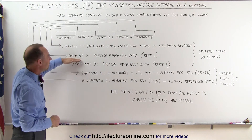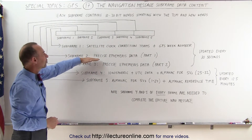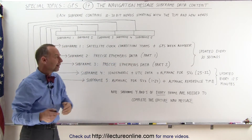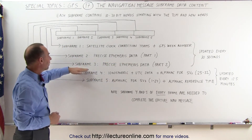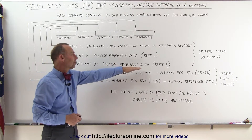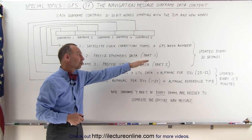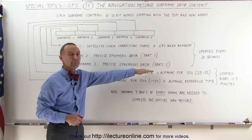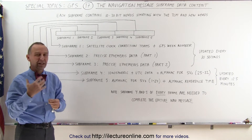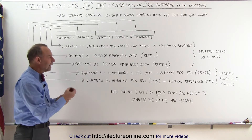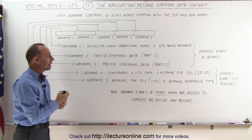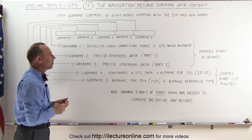The second subframe contains the precise ephemeris data of the satellite, and subframe 3 also contains the precise ephemeris data of the satellite — notice part 1 and part 2. That data contains the health of the satellite and specific information about the position and orbit of the satellite.